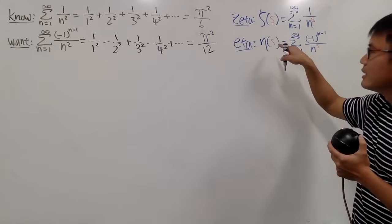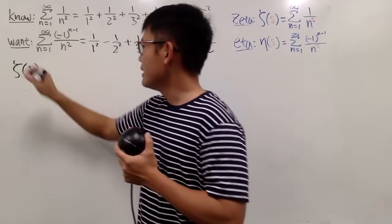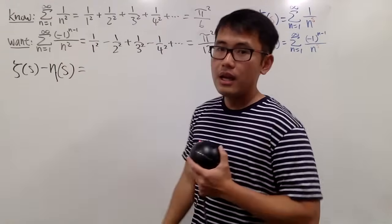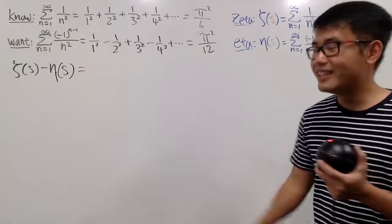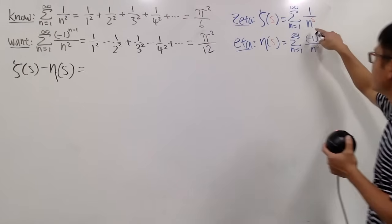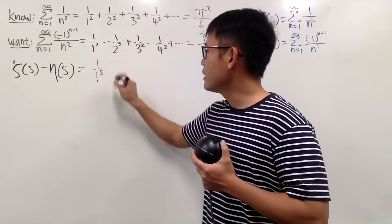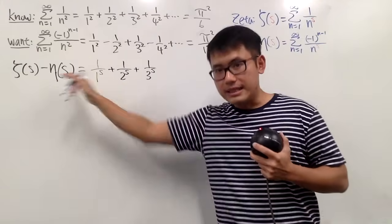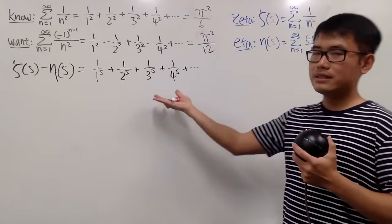What we'll do is take theta minus eta. Let me write this down: theta of s minus eta of s. First of all, we can put the minus with the summations, but I think it's easier to write down the first few terms. For theta of s, the first term is 1 over 1 to the s, then plus 1 over 2 to the s, plus 1 over 3 to the s, plus 1 over 4 to the s, and so on forever.